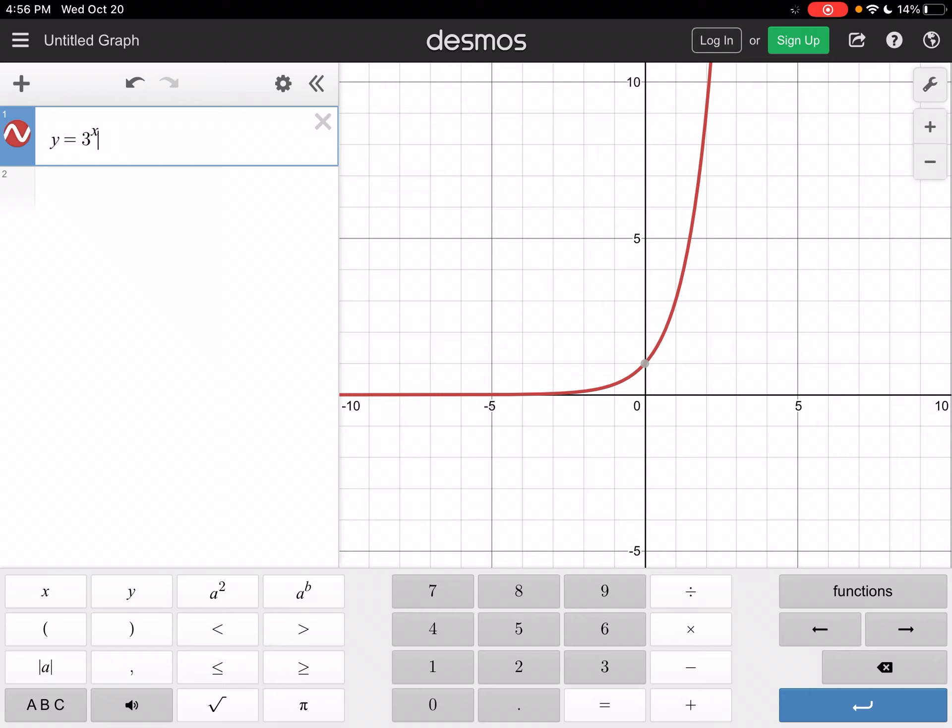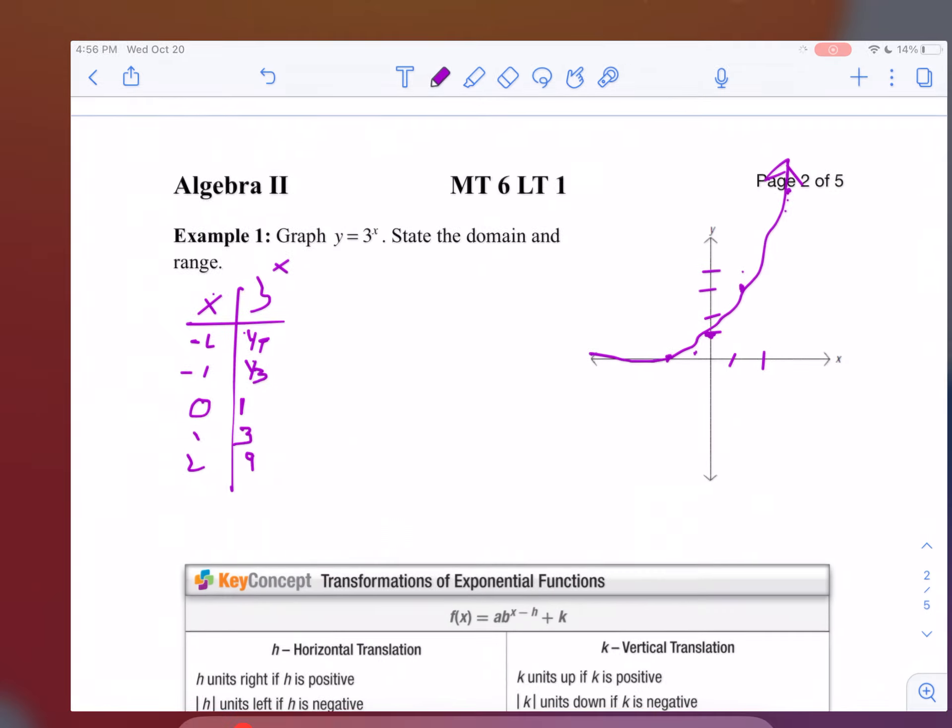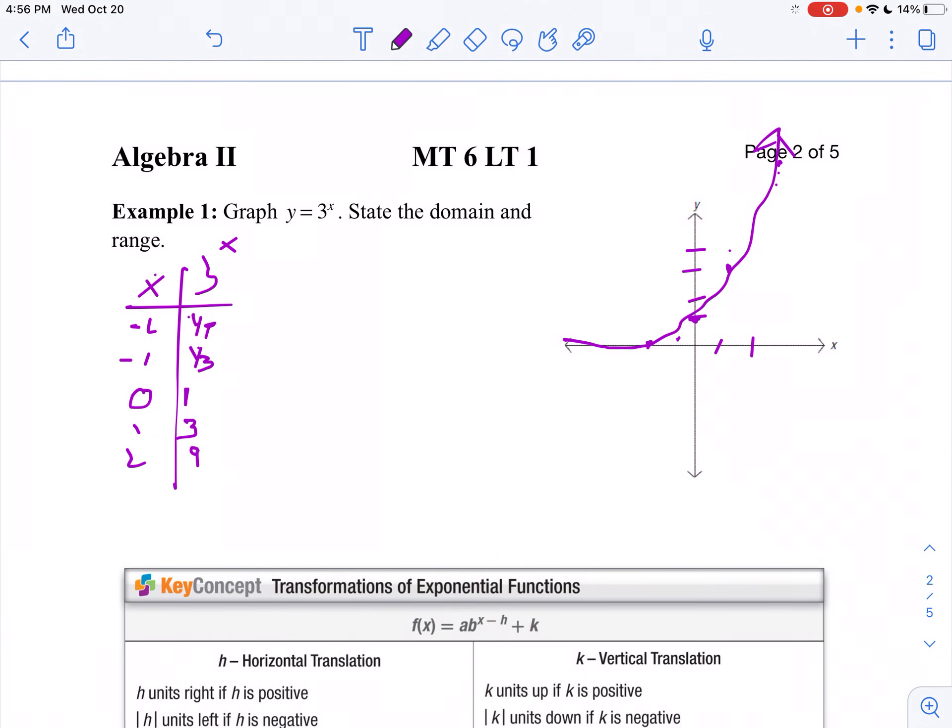The domain - remember, any number can be an x. X can be any number on my graph. It goes on forever. However, y - notice y can't be negative. So that's your range. So we're going to state that. Our domain is all real numbers. And our range - you have to restart my iPad, it's not reading my pen very well. So my range is going to be positive numbers, so y is greater than or equal to zero.